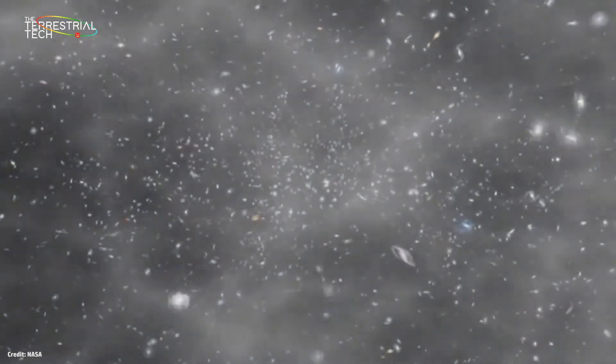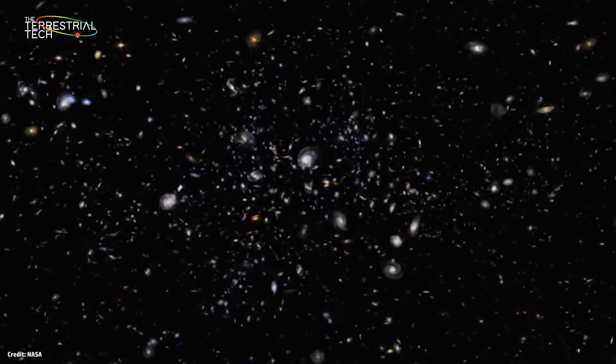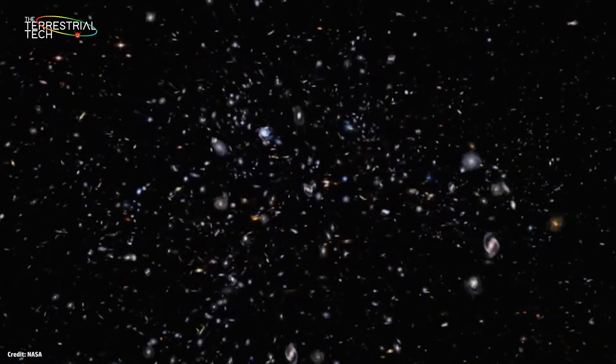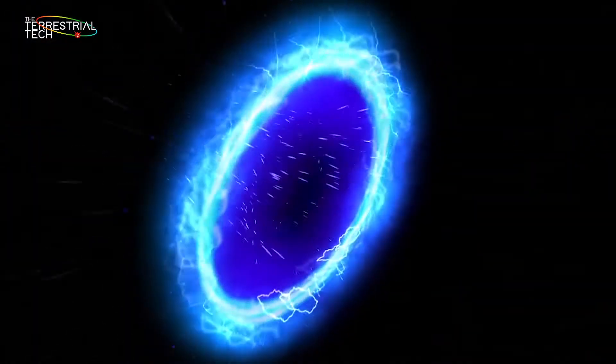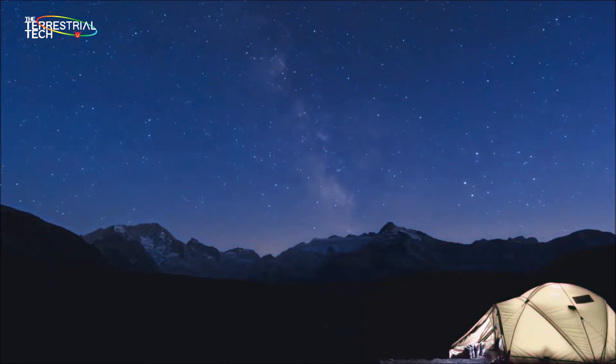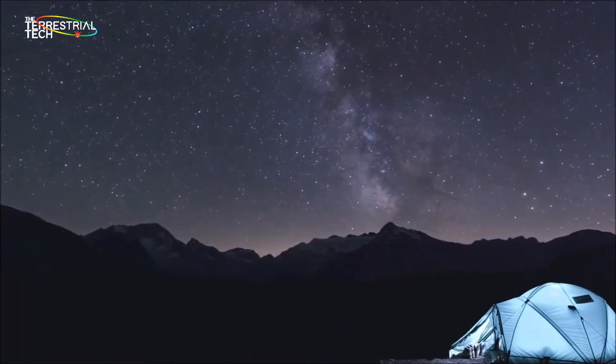About 13.8 billion years ago, our universe came into existence, after which formation of stars, black holes, galaxies, and all the matter that we see and know today formed, along with things that are yet to be discovered. Today when we look at the sky, all the galaxies and everything in existence seem to be moving away from each other.